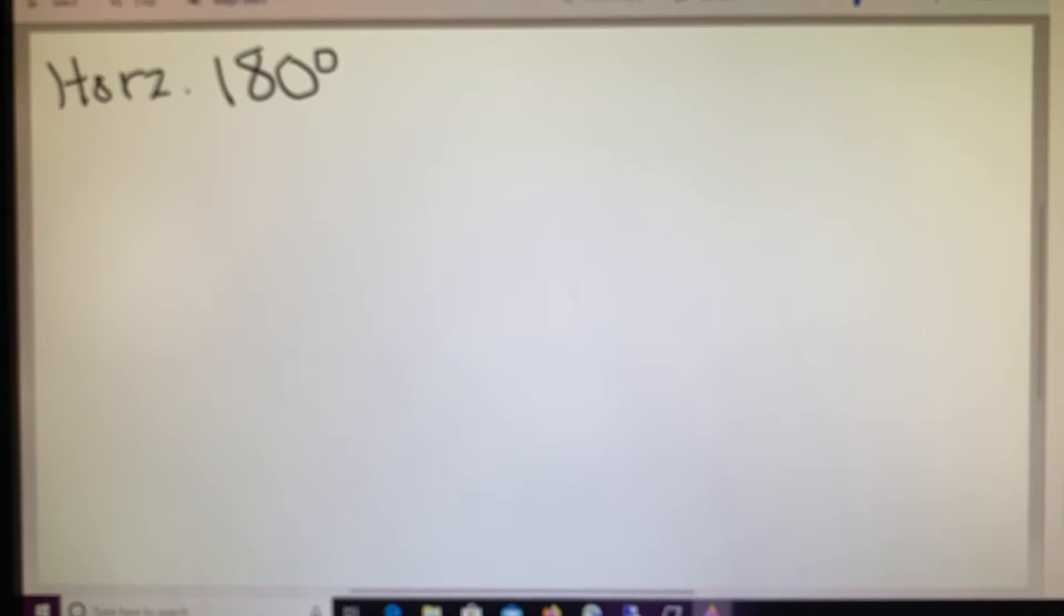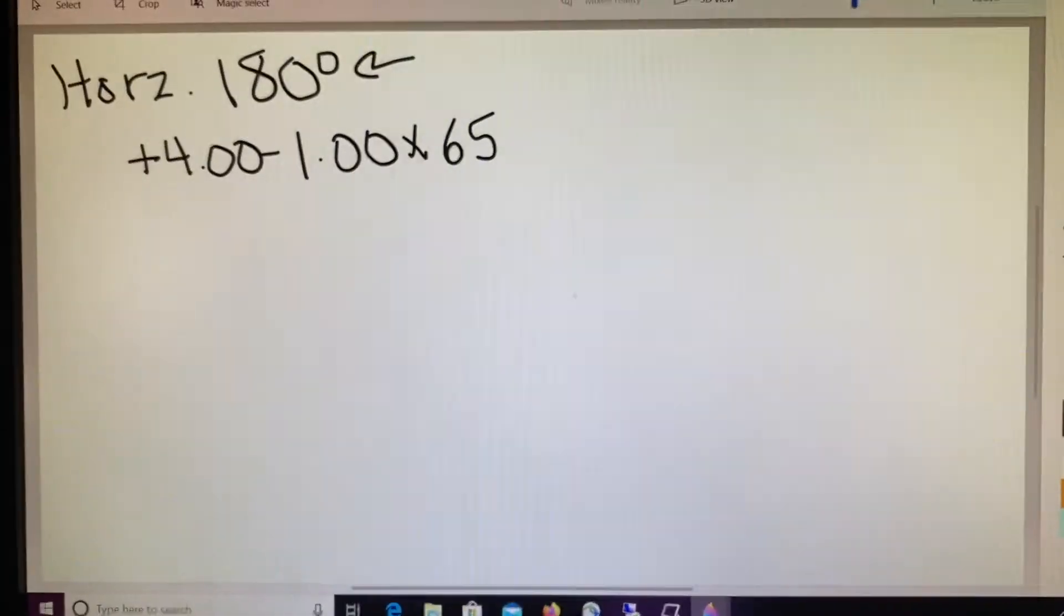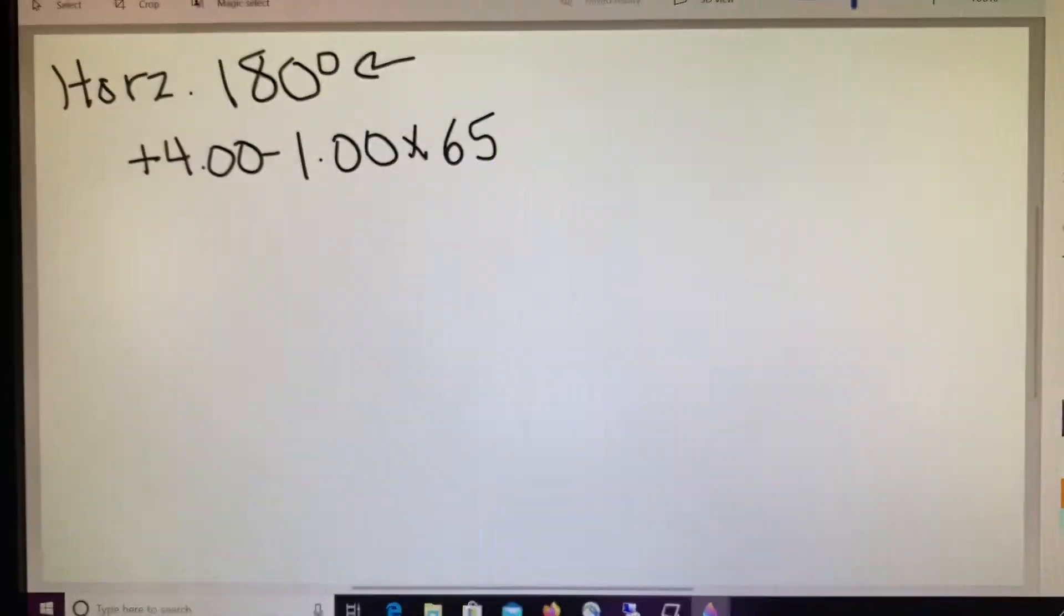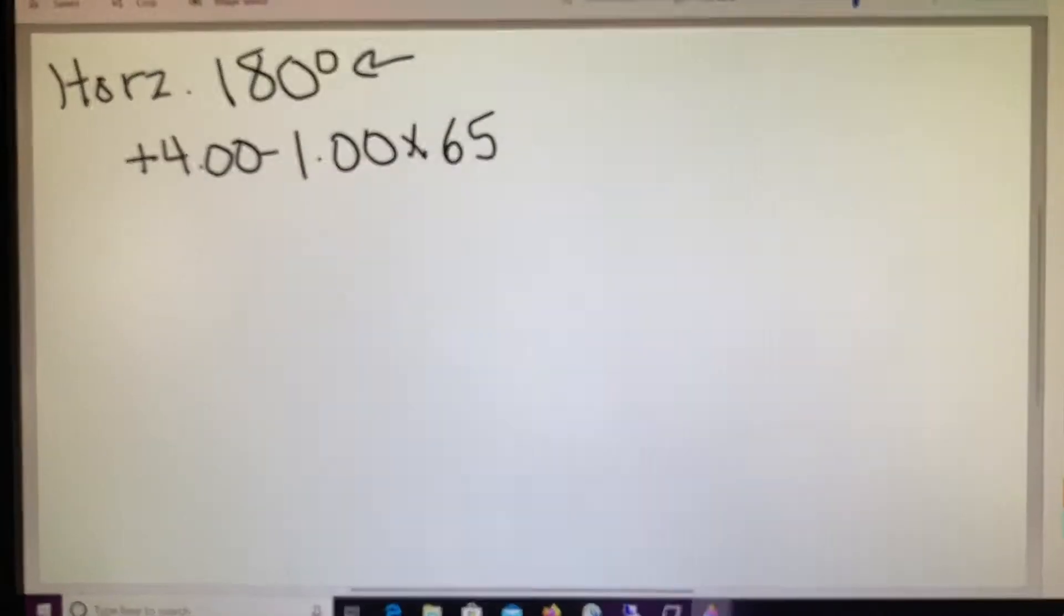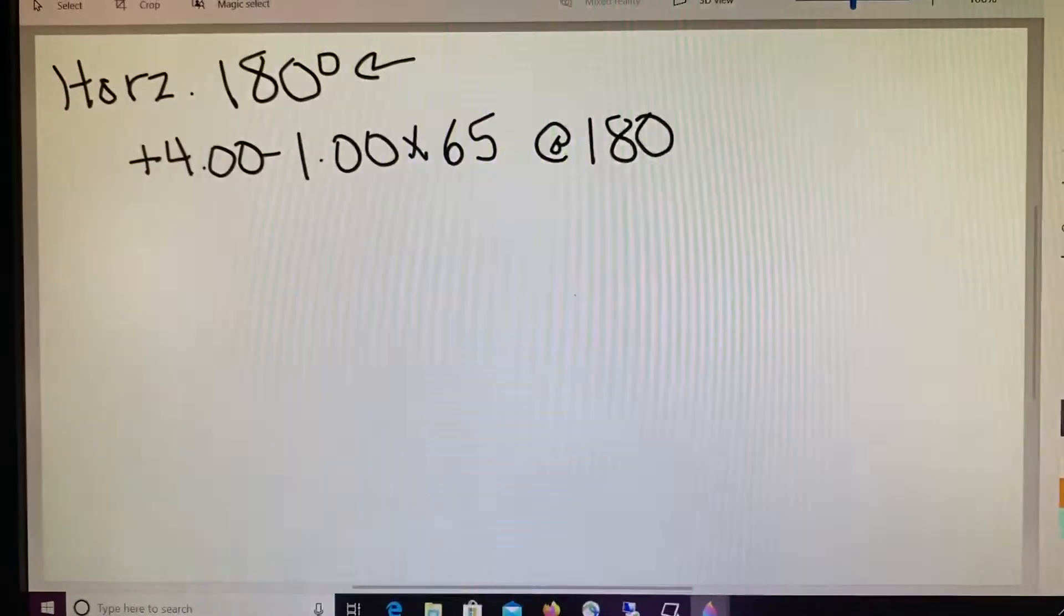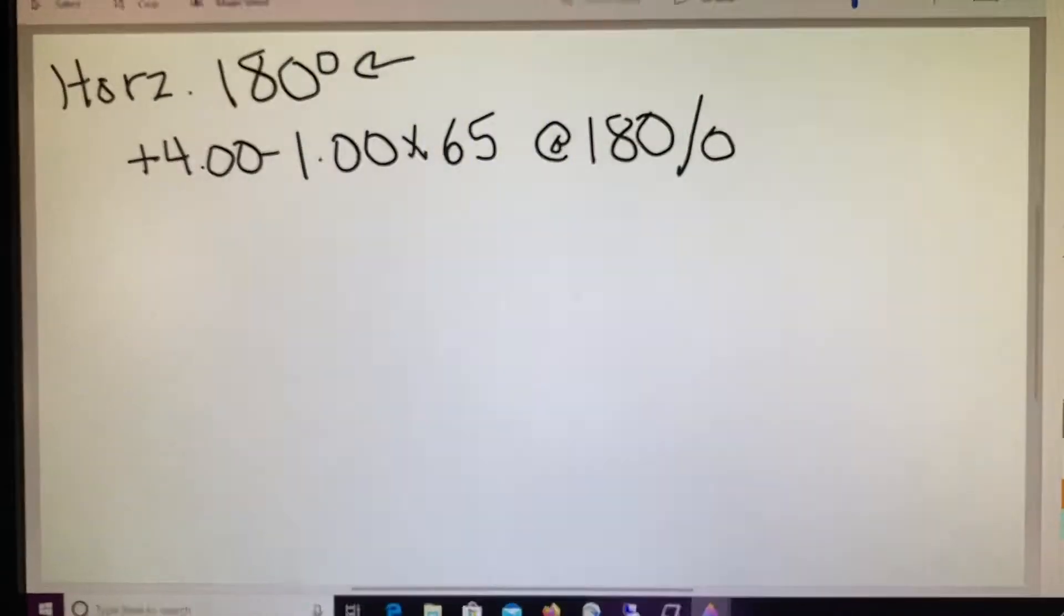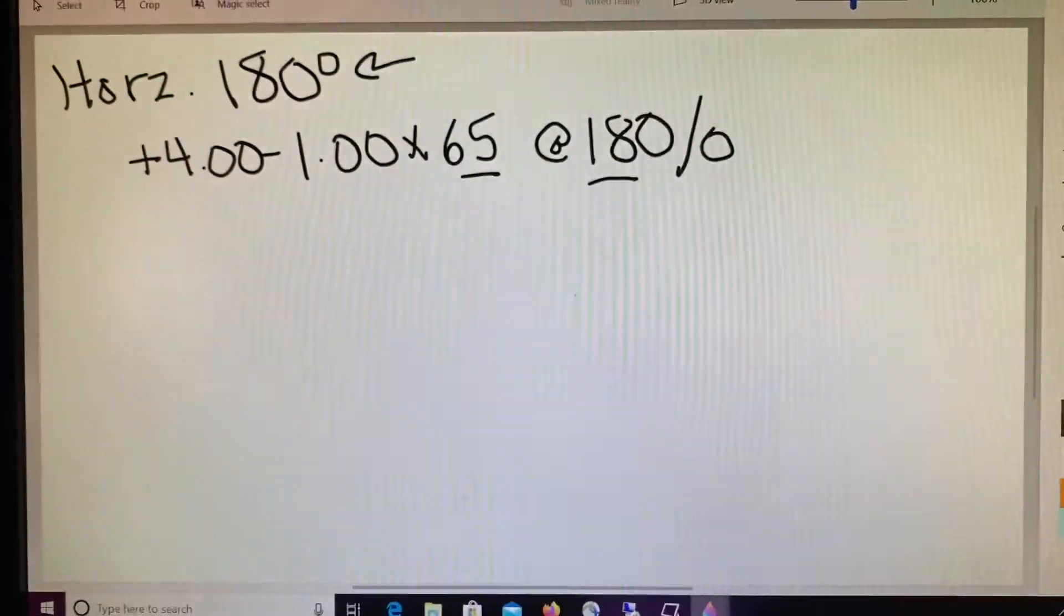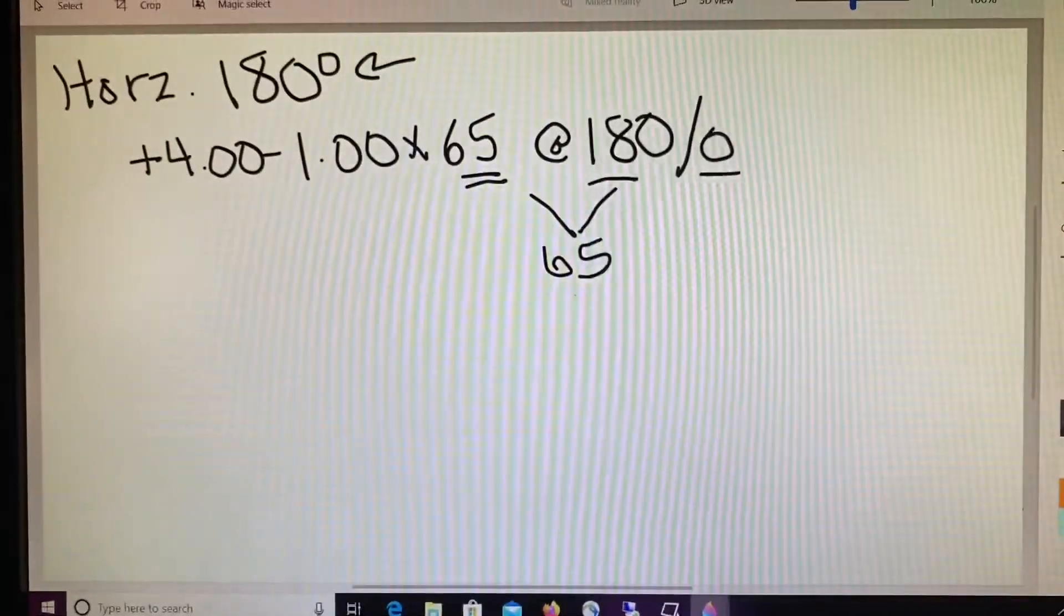So we're going to start by working through our practice example. We have a plus 4 minus 1 at 65, and remember the requested meridian is always going to be 180. The first steps in calculating induced horizontal prism is to determine what the power of the lens is at 180. Now one of the really cool things about 180 is that 180 and 0 are actually the same thing. So instead of trying to figure out how far away 65 is from 180, we can just say how far is 65 from 0, and really quickly we're able to answer that we are 65 degrees away.